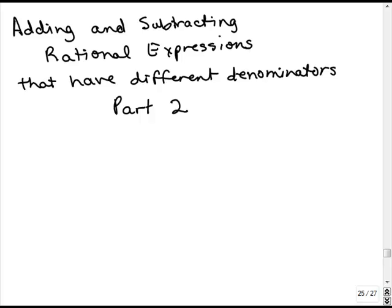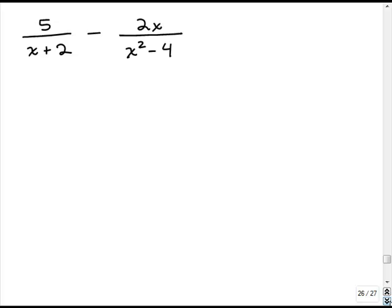This is part 2 of adding and subtracting rational expressions that have different denominators. So here's the first problem: 5 over x plus 2 minus 2x over x squared minus 4. Our first step is to rewrite these so that each denominator is factored.